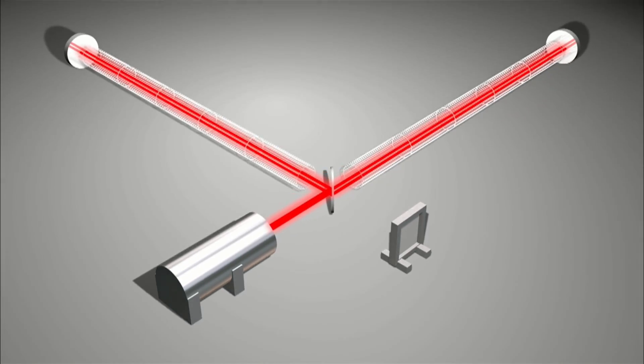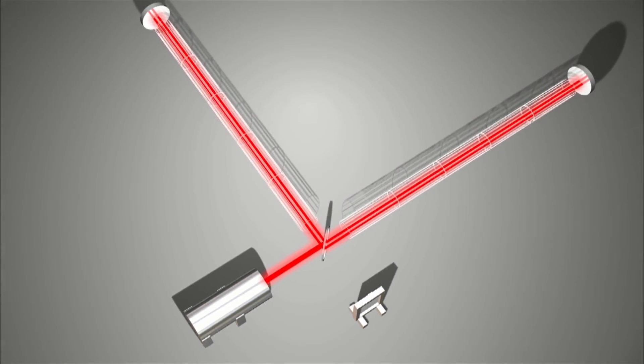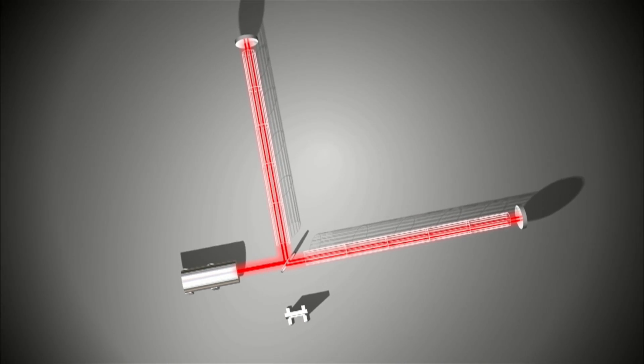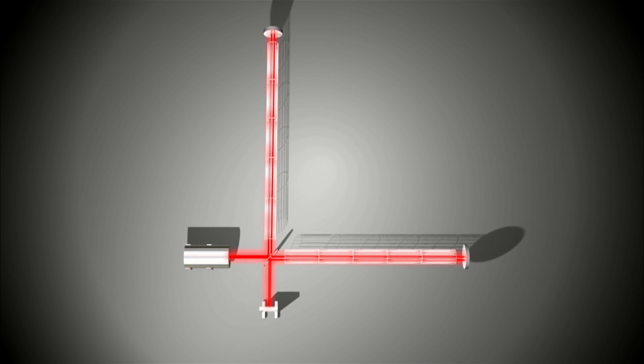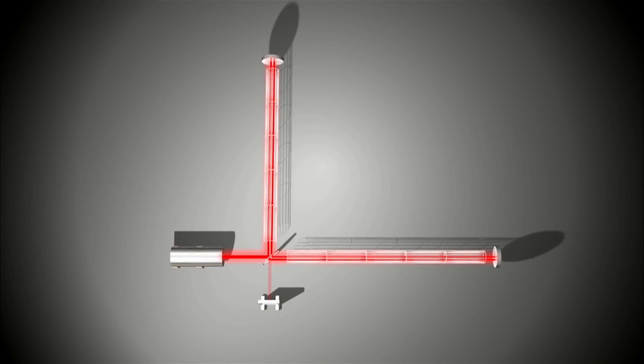But when a gravity wave comes along, it distorts space and changes the distance between the mirrors. One arm becomes a little longer, the other a little shorter. An instant later, they switch.